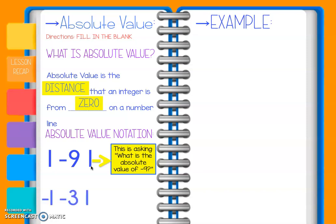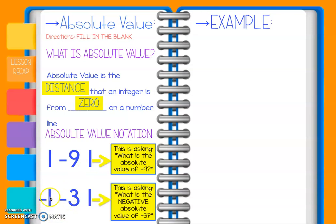Sometimes we're going to have a negative sign on the outside of those bars. So this one is saying: what is the negative absolute value of negative 3? Now let's go back to the first one — the absolute value of negative 9 is just asking us how many spaces on the number line is negative 9 away from 0. Negative 9 is 9 spaces away.